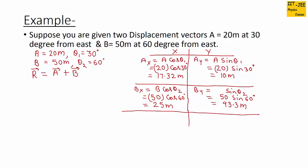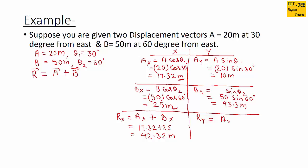Now we have the x and y components of each vector. We add both x components to find rx: ax plus bx equals 17.32 plus 25, which gives rx equal to 42.32 meters. The same way we find ry by adding both y components: ay plus by equals 10 meters plus 43.3 meters, which gives ry equal to 53.3 meters.